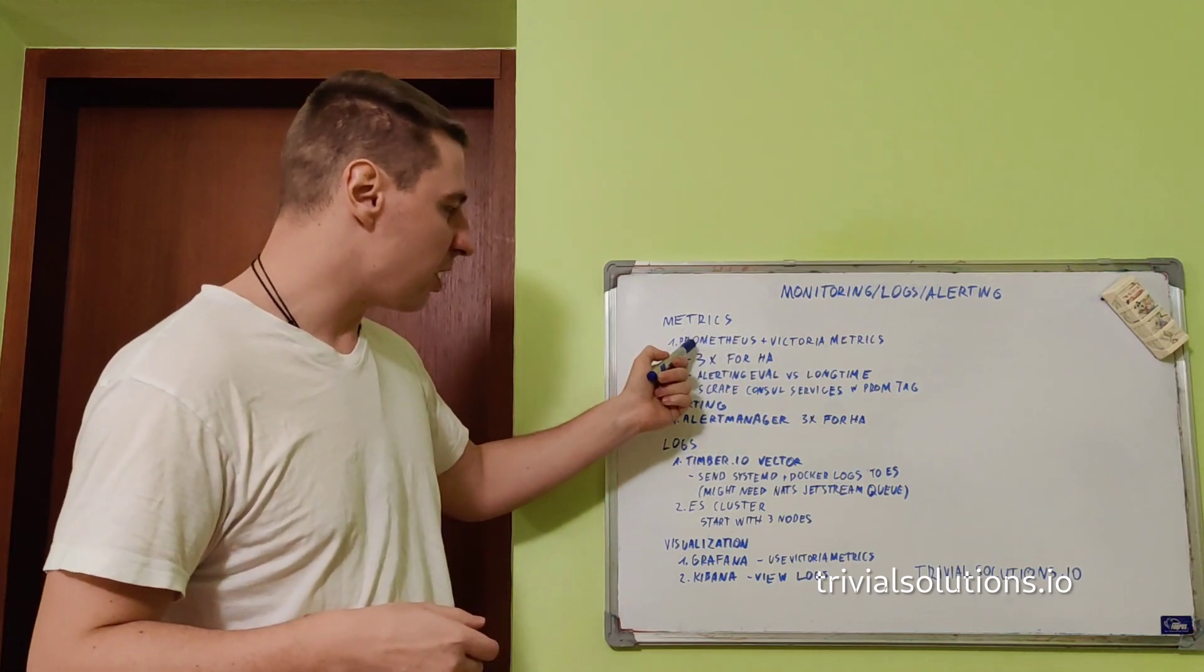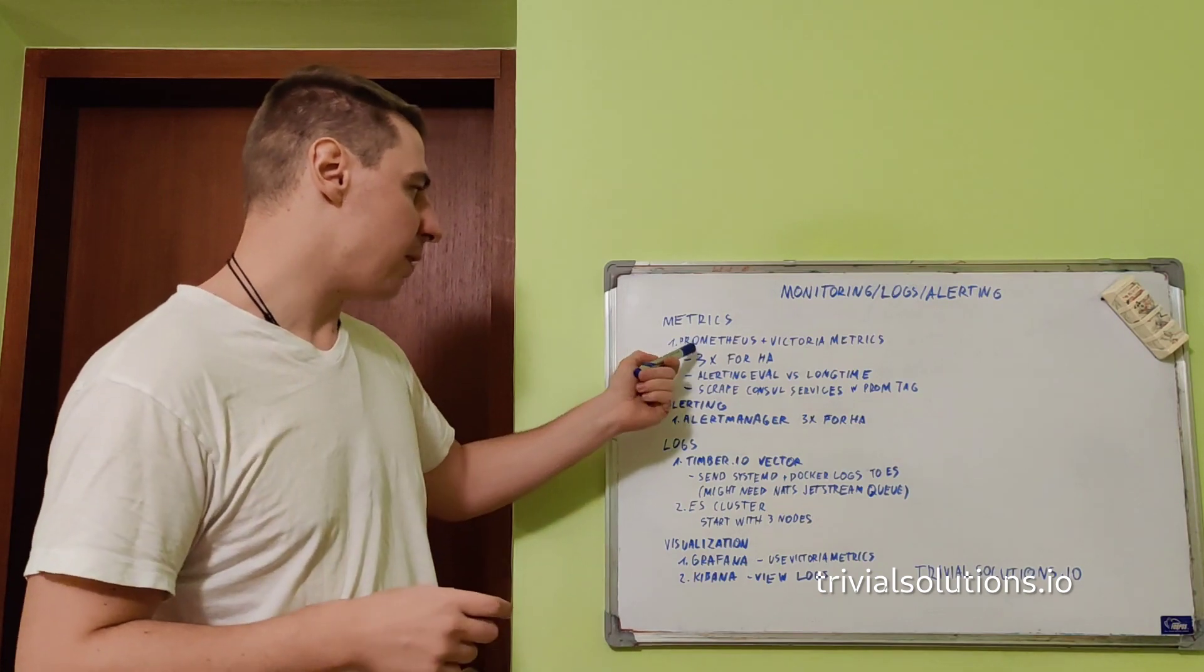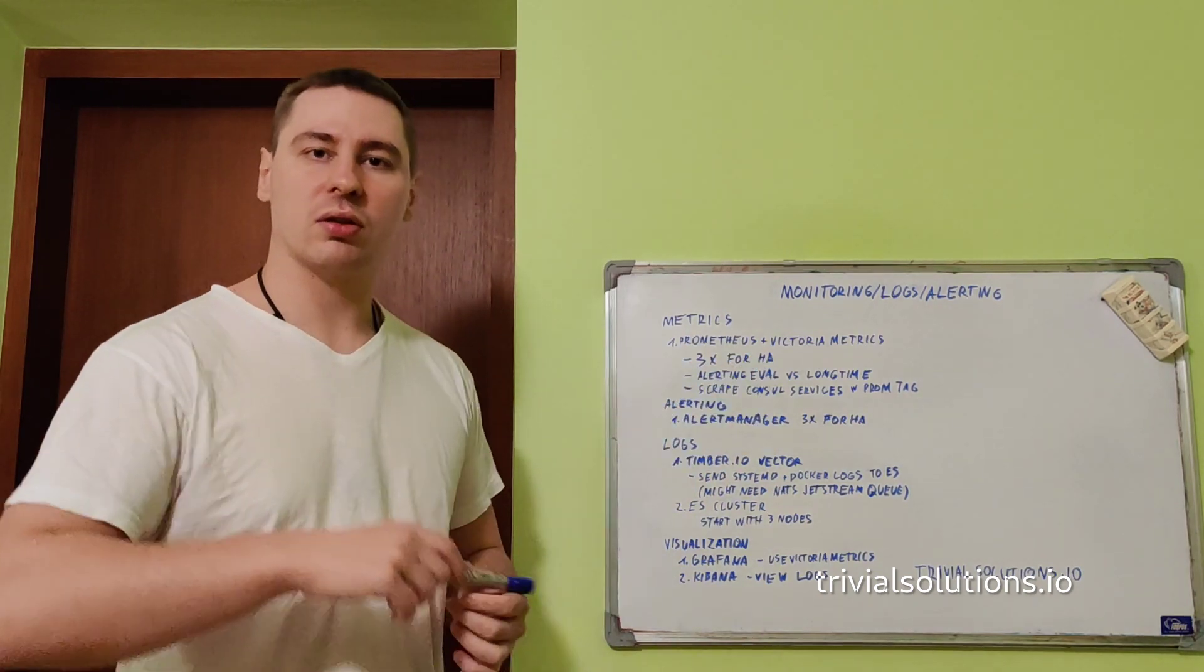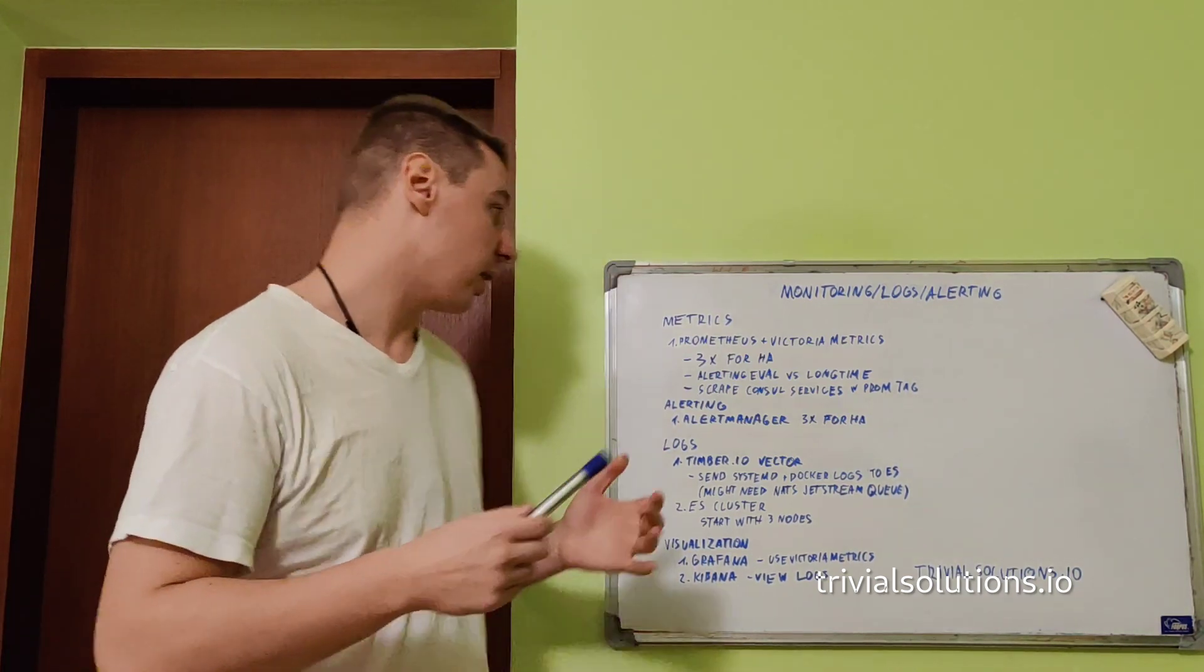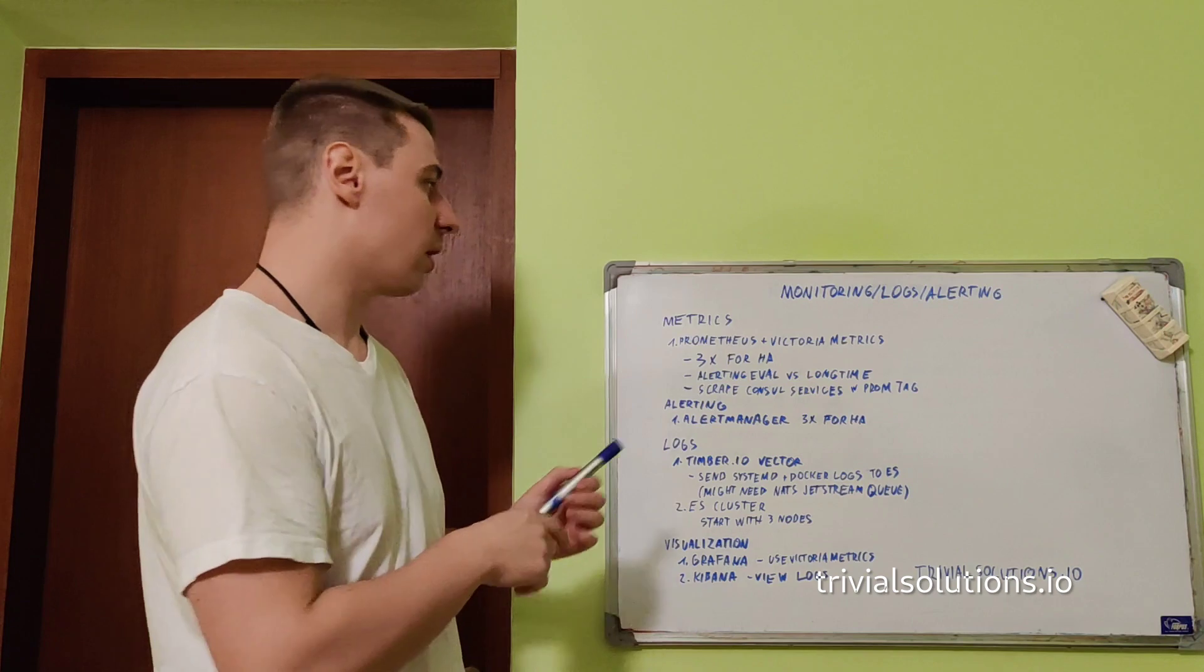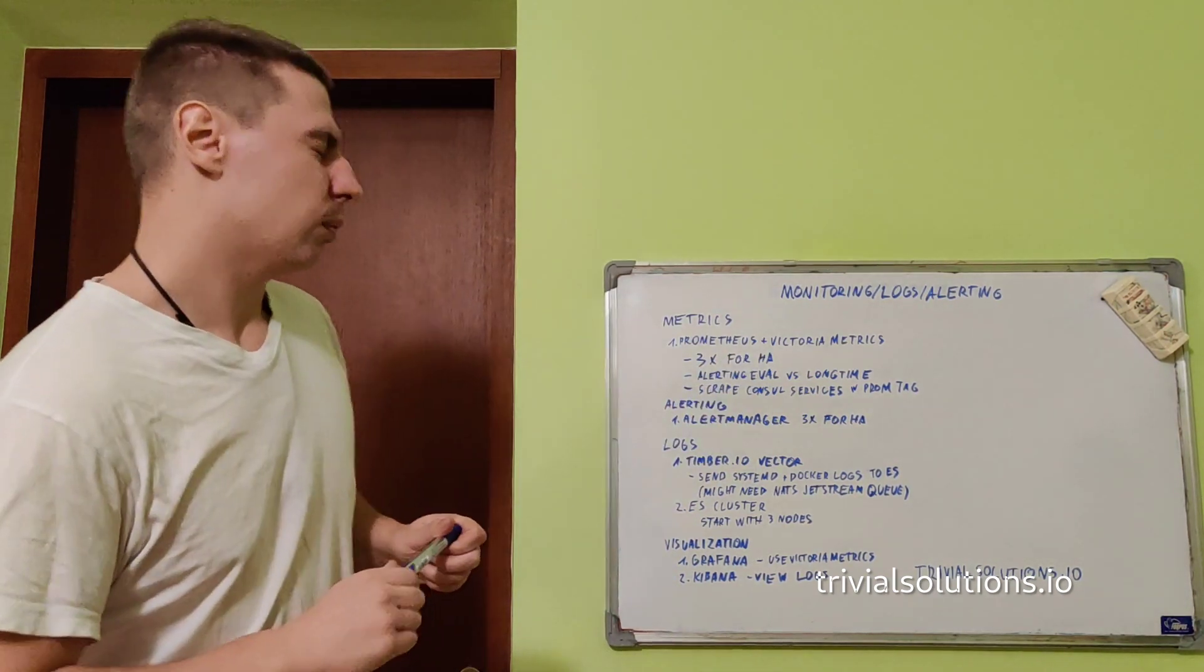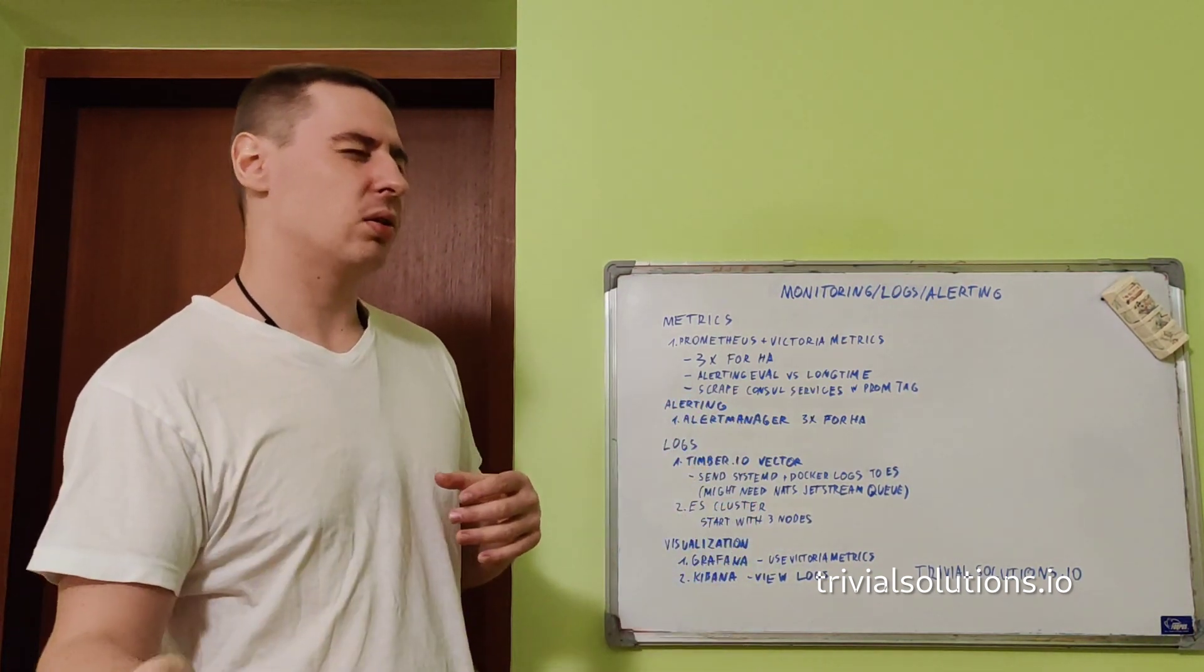I run three instances of Nomad job. On one server, there's one Prometheus and Victoria Metrics instance running. What happens is Prometheus scrapes stuff and then forwards those to Victoria Metrics as well for long-term storage. I use both of these.